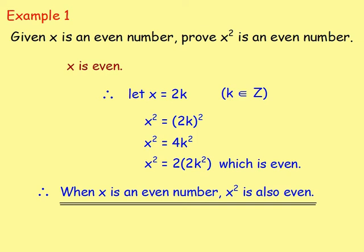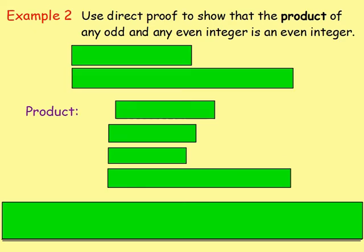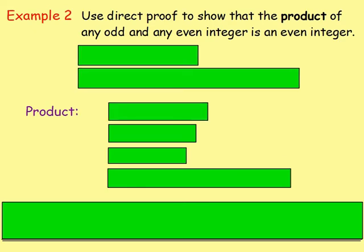So we've proved that. When X is an even number written as 2K, X squared is 2 times something, which means that is also going to be even. Example two: use direct proof to show that the product of any odd and any even integer is an even integer.